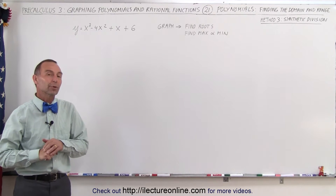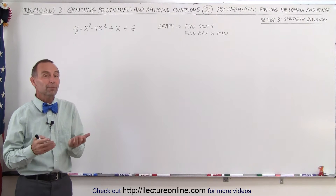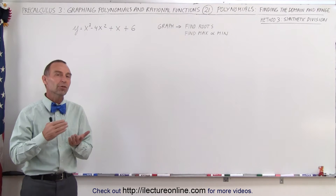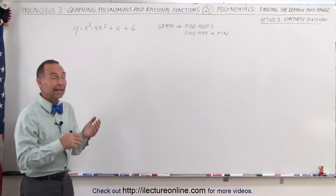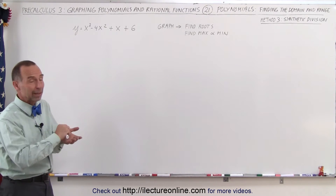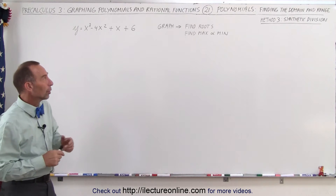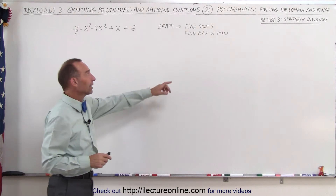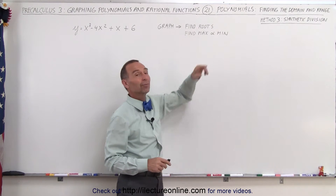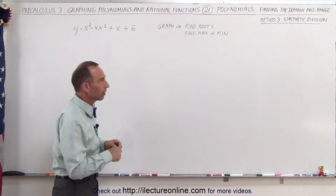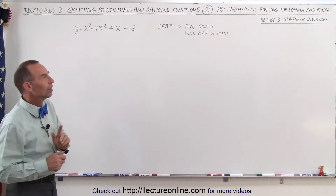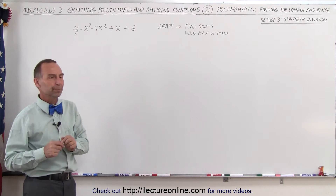Welcome to Electronline. Here we're going to show you the third method of how to find the range and the domain of a polynomial. It all comes down to finding the graph — to be able to graph the polynomial. We want to find the roots, we want to find the max and min points, or the local max and min points on the graph. What we're going to use here is the method of synthetic division.